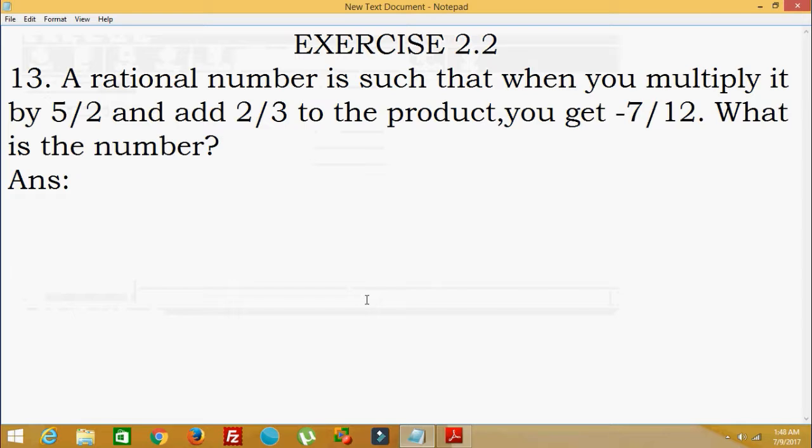Here, a rational number is such that when you multiply it by 5/2 and add 2/3 to the product, you get -7/12. What is the number?